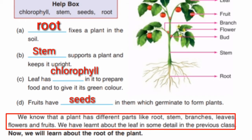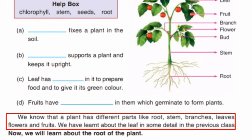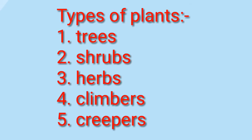In the last class we learned that a plant has different parts like root, stem, branches, leaves, flowers, and fruits. We also discussed various types of plants: trees, shrubs, climbers, and creepers. In this chapter we will discuss about the root of the plant.